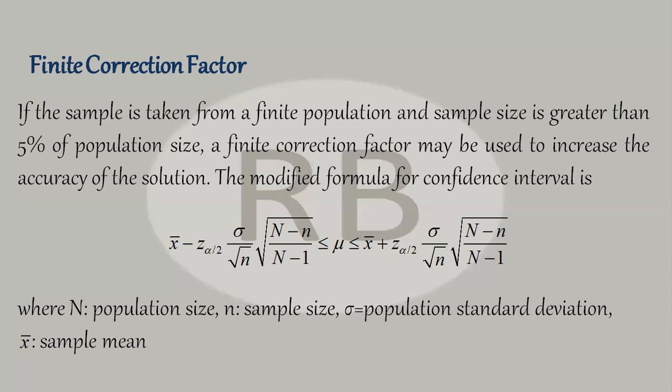So the distribution of the sample means is approximately normal, having mean equal to population mean, and standard deviation equal to sigma by root n.